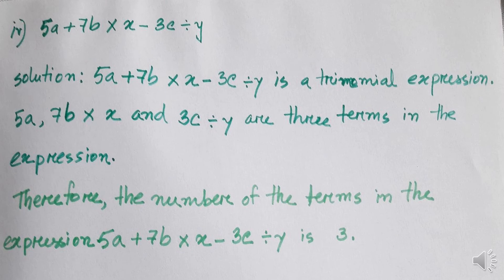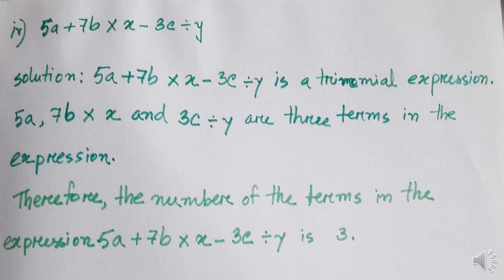Number 4: 5a plus 7b into x minus 3c divided by y. This is a long expression, and we can see this is a trinomial expression. Because here addition, subtraction, multiplication, and division are present, but multiplication and division do not separate terms. So, 5a plus 7b into x minus 3c divided by y is a trinomial expression. Therefore, the number of terms in this expression is three.